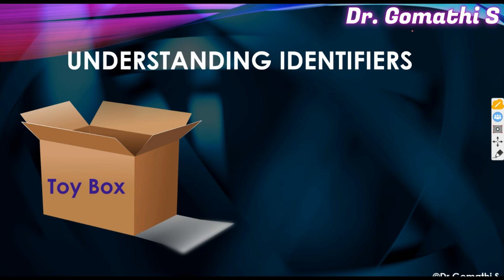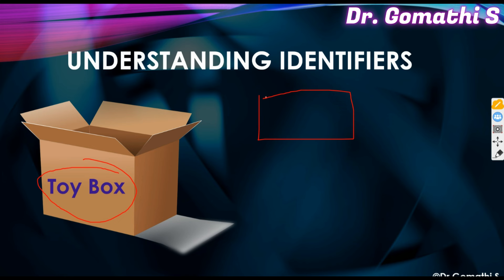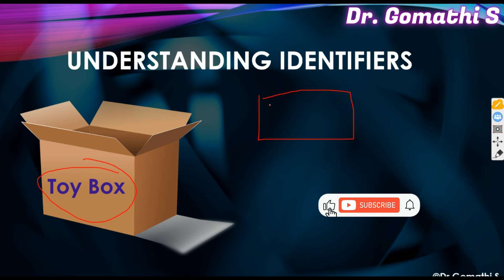Now let's understand identifiers. An identifier is the nickname for a variable. If you have a collection of a hundred boxes, you can't just call them box one, box two, box three — you need to give each a specific name. An identifier is a nickname for something you can easily call without describing it every time. For example, if you have a pet dog named Buddy, you don't say 'the brown dog, please come' — you simply call 'Buddy.' That is how an identifier works: it is naming a variable to describe it.